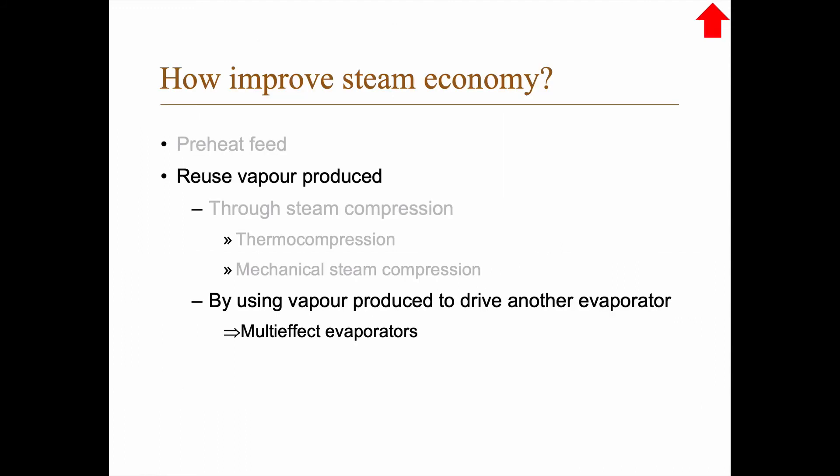So this means that we can improve the steam economy by reusing the vapor produced in a multi-effect evaporator. But due to the boiling point elevation, there is a limit to how many effects we can practically have. And the limit depends on the situation. So in many cases, five or six is the maximum.